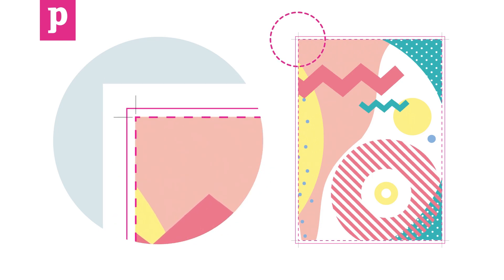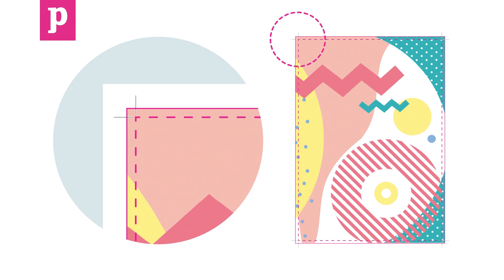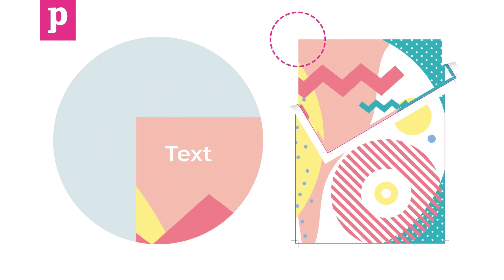The bleed is indicated by the red line running around the document. Don't forget it's really important to make sure that the artwork extends right to the outside edge of the bleed area and that any text is set at a safe distance from the trim line.